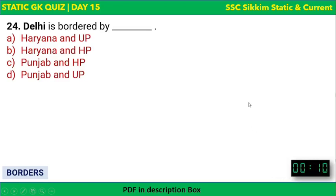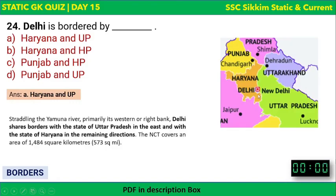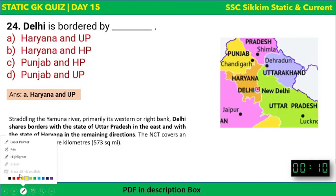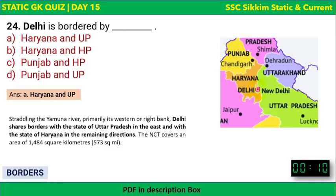Delhi is bordered by which states? The options are: Haryana and UP; Haryana and Himachal Pradesh; Punjab and HP; or Punjab and Uttar Pradesh. The correct answer is Haryana and Uttar Pradesh. Delhi borders Uttar Pradesh to the east, and Haryana in all remaining directions. It straddles the Yamuna River on its eastern side.